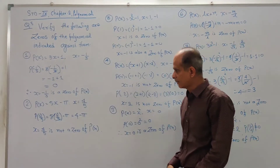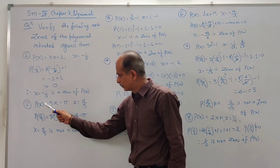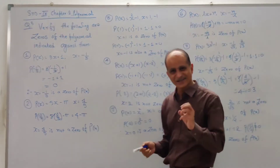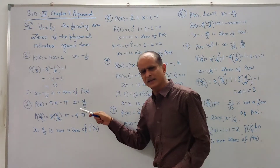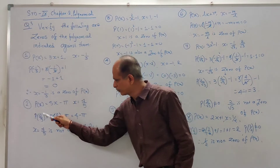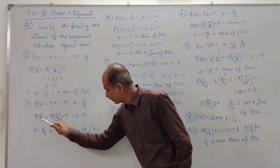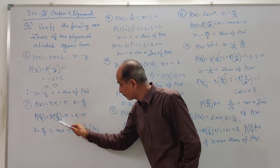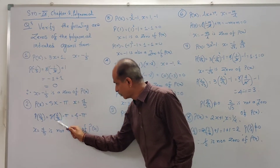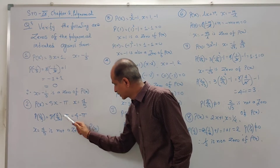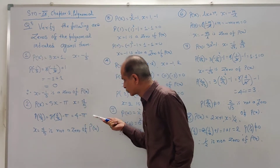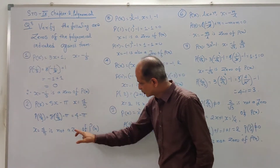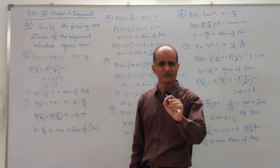Second example: P(x) = 5x - 5 and the value of x is equal to 4/5. Now put the value x = 4/5 into the given polynomial. So P(4/5) = 5 × (4/5) - 5. The 5s cancel, giving 4 - 5 = -1, which is not equal to 0. That's why x = 4/5 is not a zero of the given polynomial.